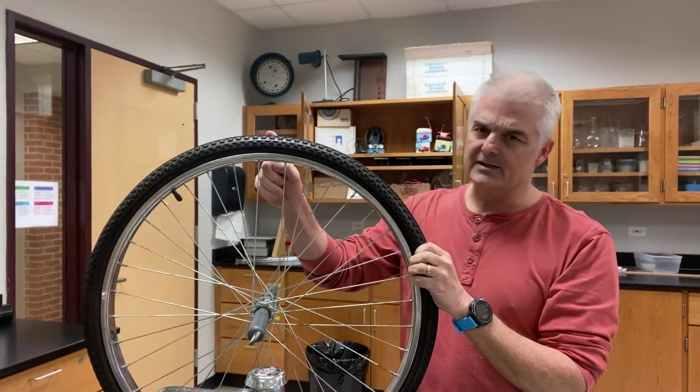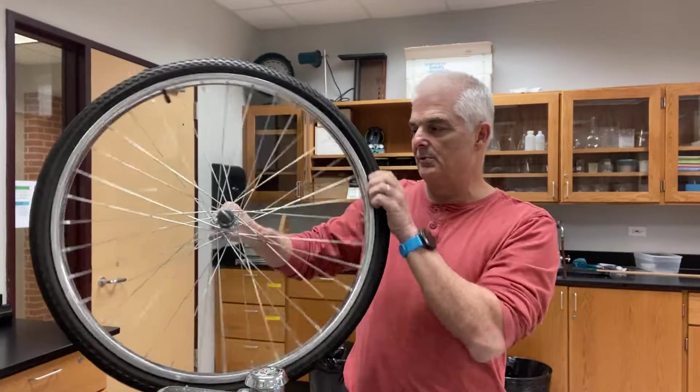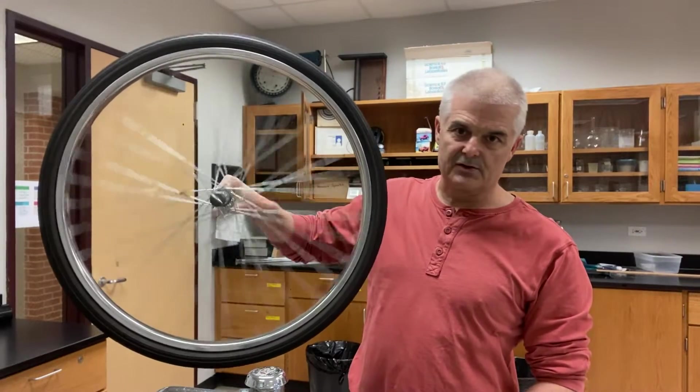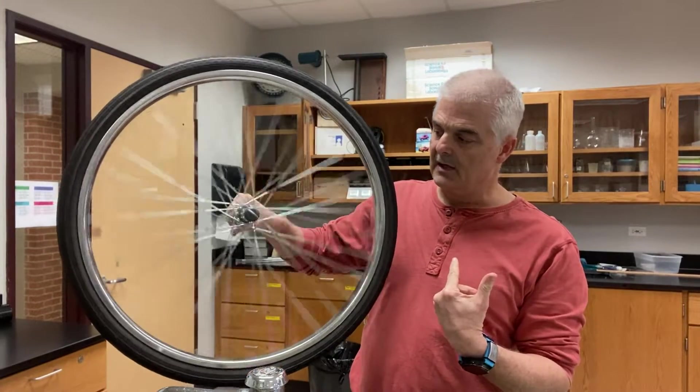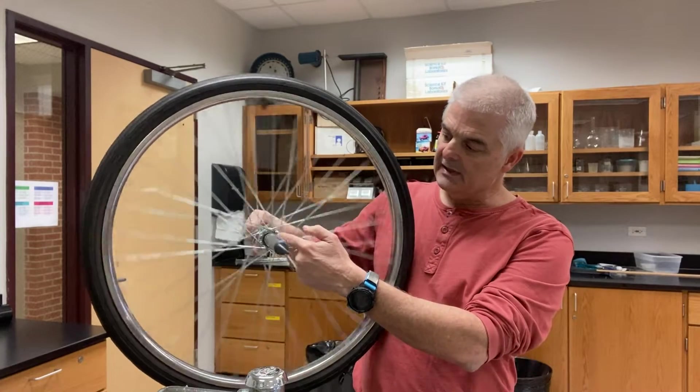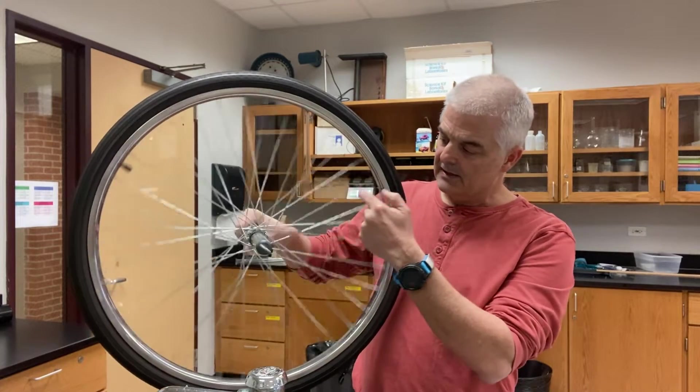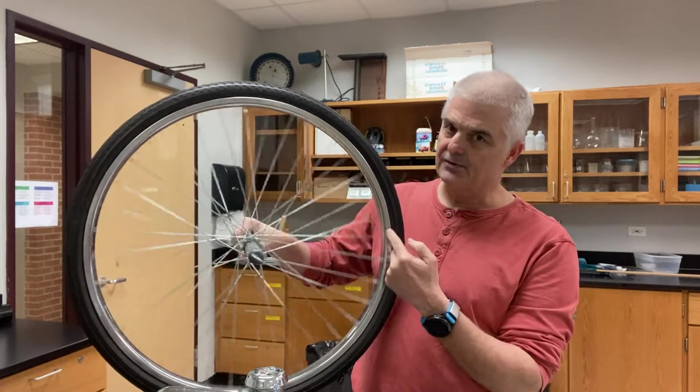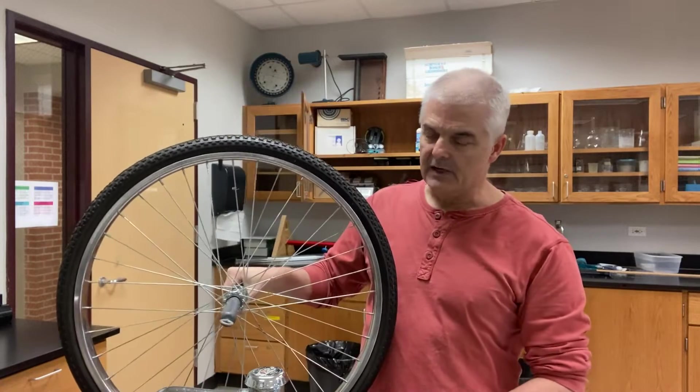But that creates a conundrum in that, if you think about it for a moment, the distance around a circle is 2 pi r, and we can figure out how many revolutions happening per second, but the speed inside the circle is different than the speed outside the circle. So that creates a bit of a conundrum.